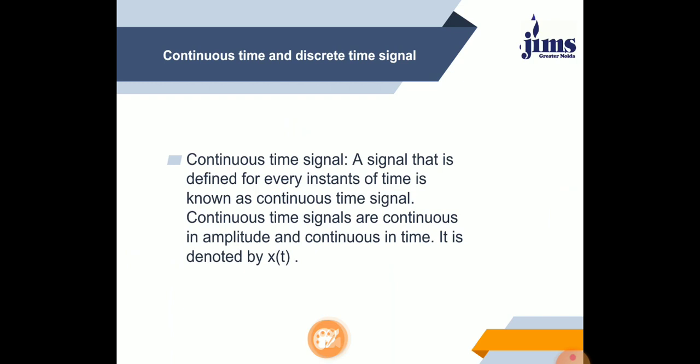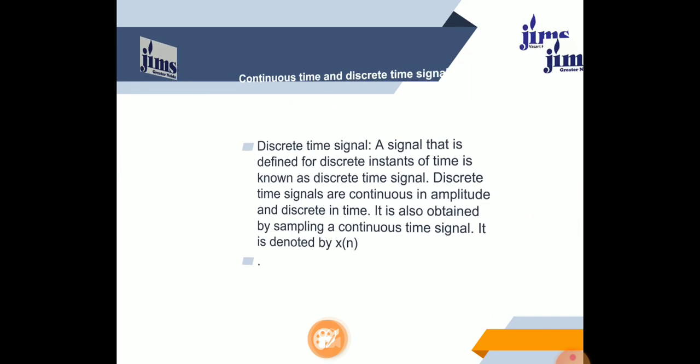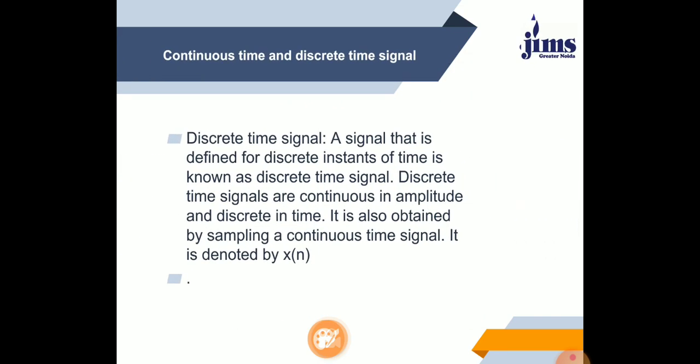Next are continuous time and discrete time signals. A signal that is defined for every instant of time is known as a continuous time signal. Continuous time signals are continuous in amplitude and continuous in time, and are denoted by x(t).